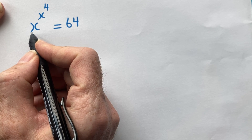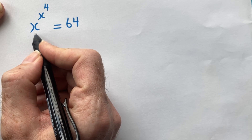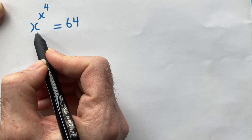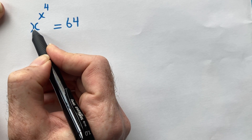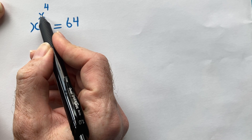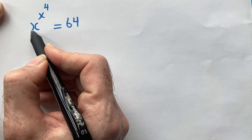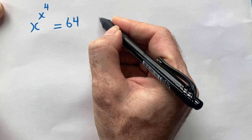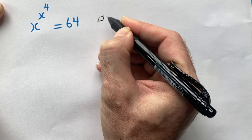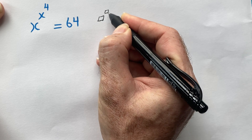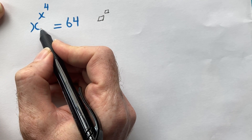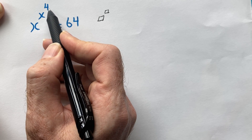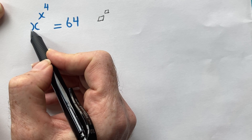Welcome back to my channel. In this video we are going to solve this equation. To start the solution, I'm going to work on the left hand side, which is x to the power of x to the power of 4. I'm going to make this left hand side in the form of a base to the power of itself. We have two x's but only one 4, so we need another 4.